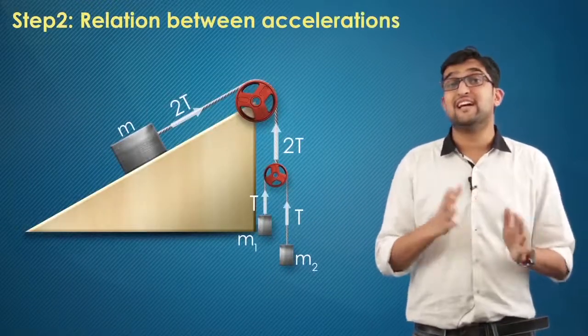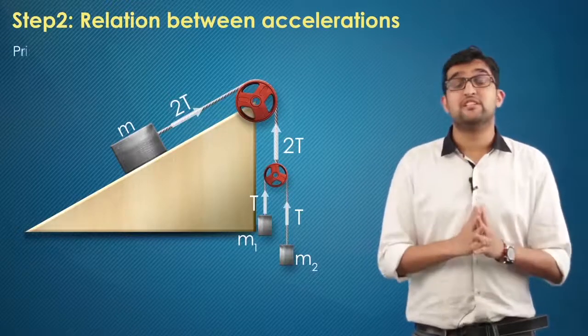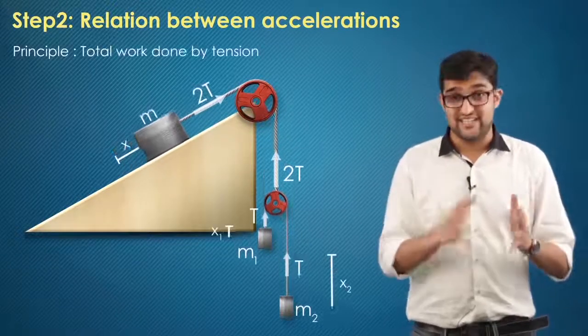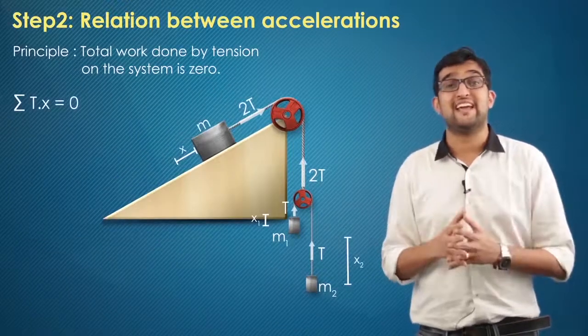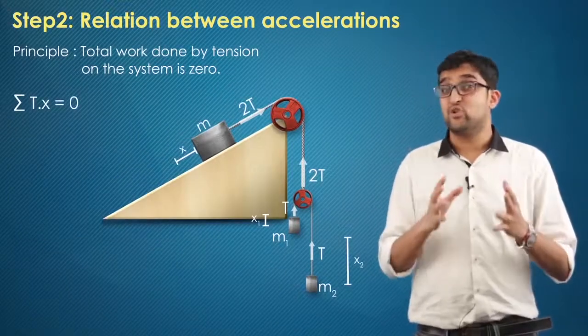Now instead of using the length constraint expression, we will be using a principle that the total work done by tension on this system is zero. That is, summation T dot X equal to zero. Applying this to our system...